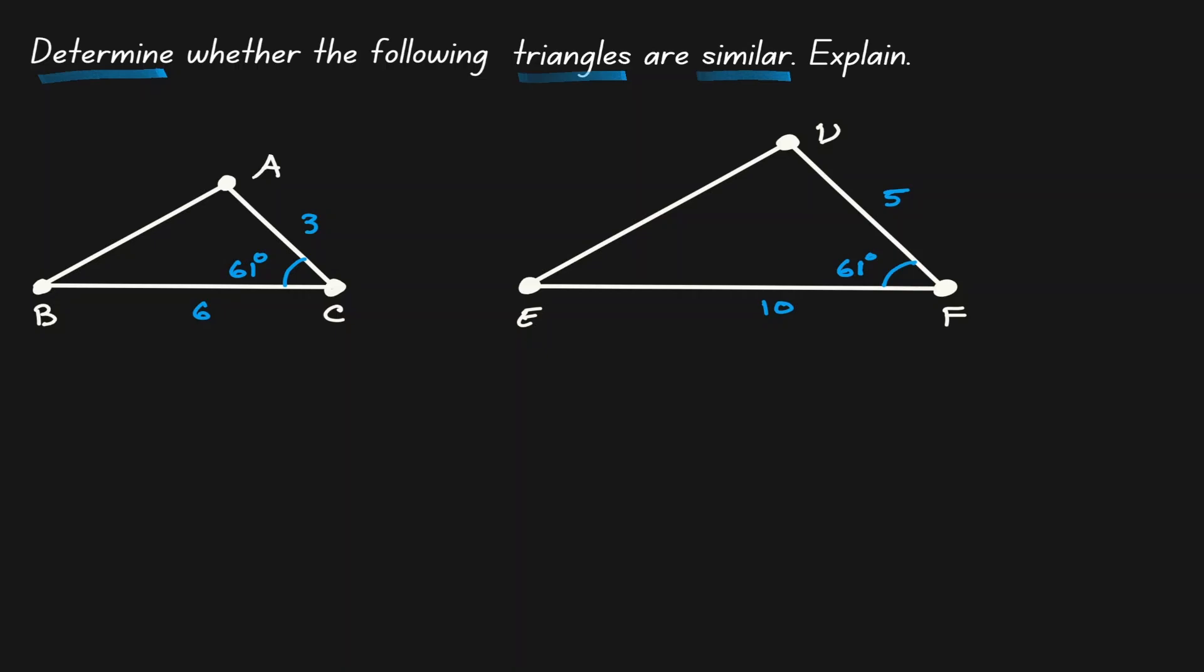Within the two triangles that we are given, one thing that stands out is that there is a pair of congruent angles, angle C and angle F. And when you have a pair of congruent angles, this is a good indicator that you want to think about side angle side similarity theorem.